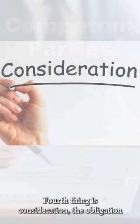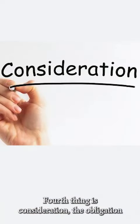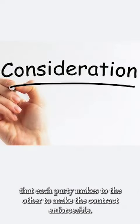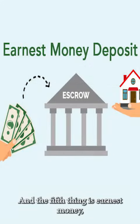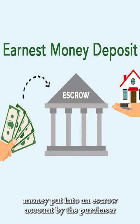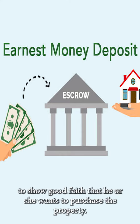The fourth thing is consideration — the obligation that each party makes to the other to make the contract enforceable. And the fifth thing is earnest money, money put into an escrow account by the purchaser to show good faith that he or she wants to purchase the property.